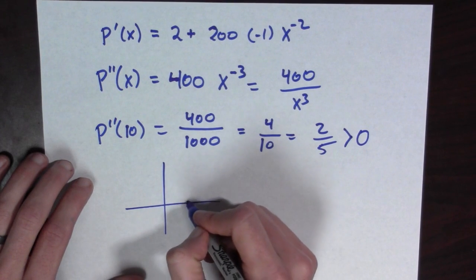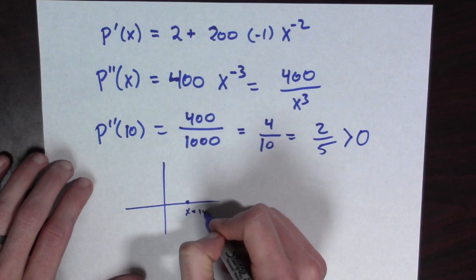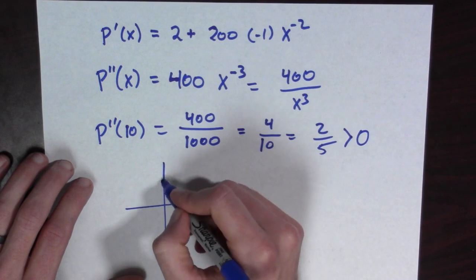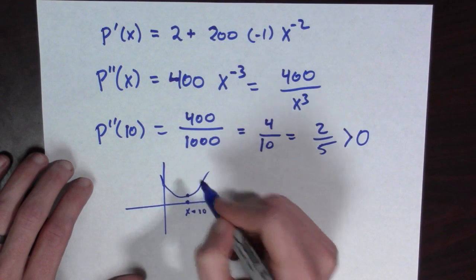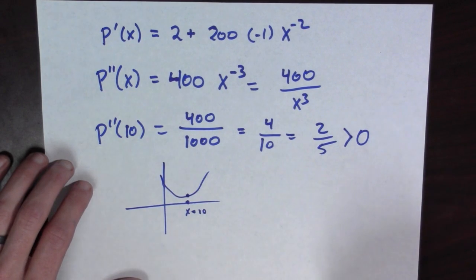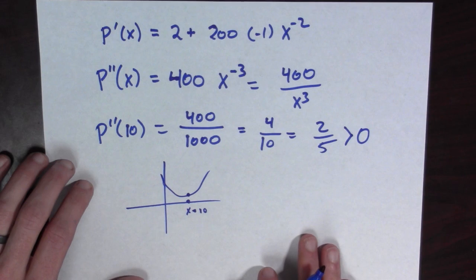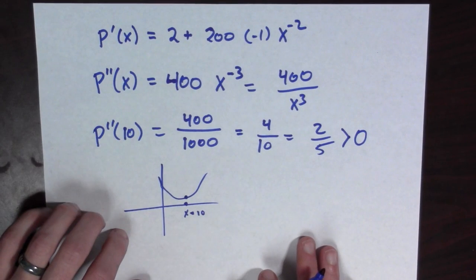So we see that our curve is concave up at this point. And if we have a critical point at x equals 10, and the curve is concave up, that means that this is a minimum. Yeah, so that's the only critical point we've found that this must be the global minimum.